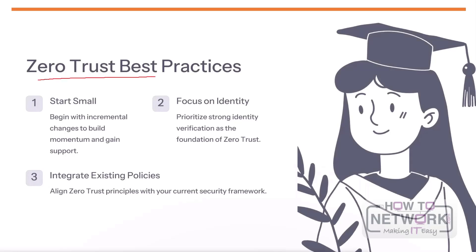Zero trust best practices include starting small — make incremental changes to build momentum and gain support within the organization. Identity is the foundation of zero-trust, so prioritize strong identity verification to ensure only authorized users can access your systems and data. Align zero-trust principles with your existing security framework and integrate zero-trust into your current policies and processes for a seamless transition. The goal is to create a security environment where trust is continuously validated rather than assumed, helping protect against modern threats like data breaches and unauthorized access.